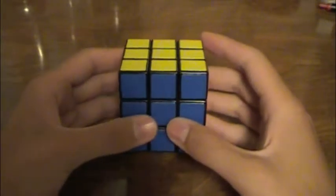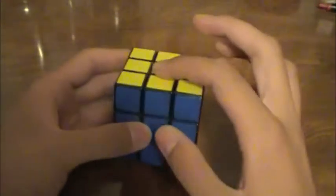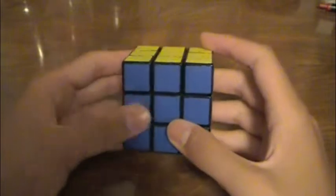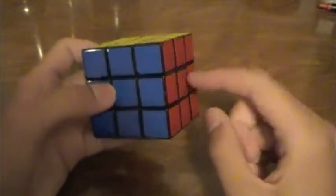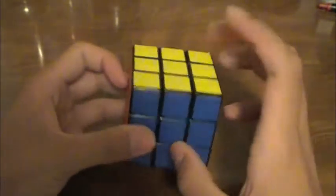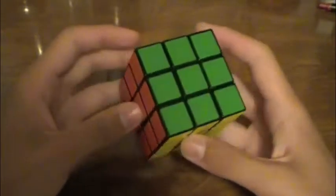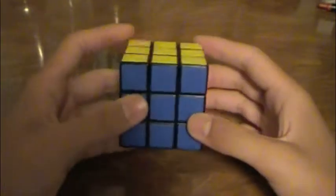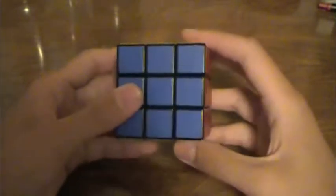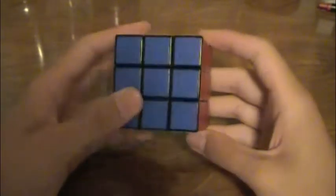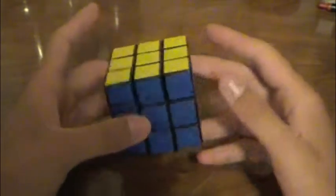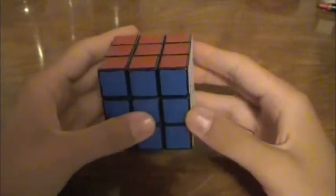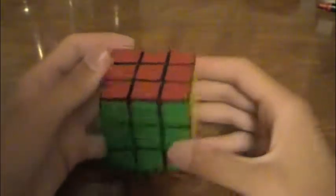In Japanese notation, you also use lowercase letters to signify cube rotations. And they are in reference to r, f, and u. You would never see a lowercase l, b, or d in Japanese notation. So, this would be a little r, little r prime, little f, little u2, and so on.